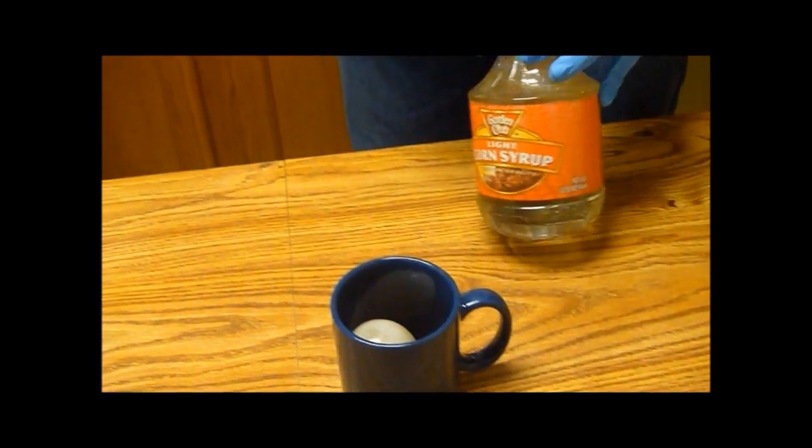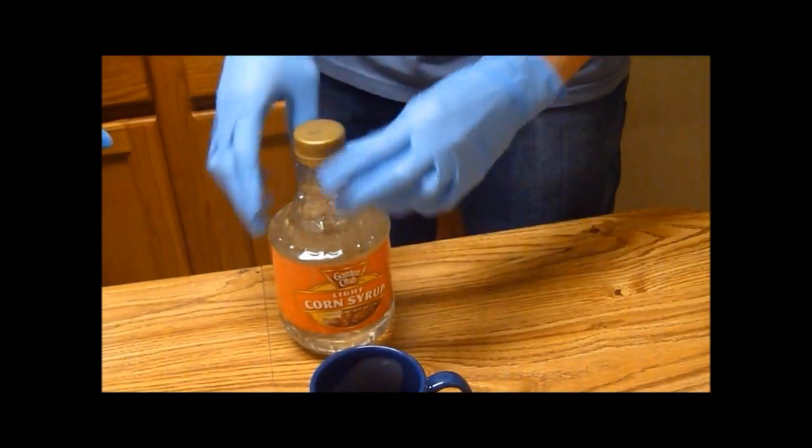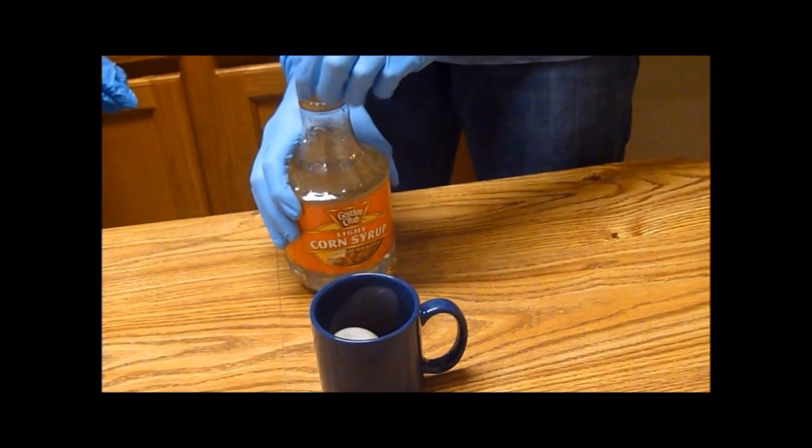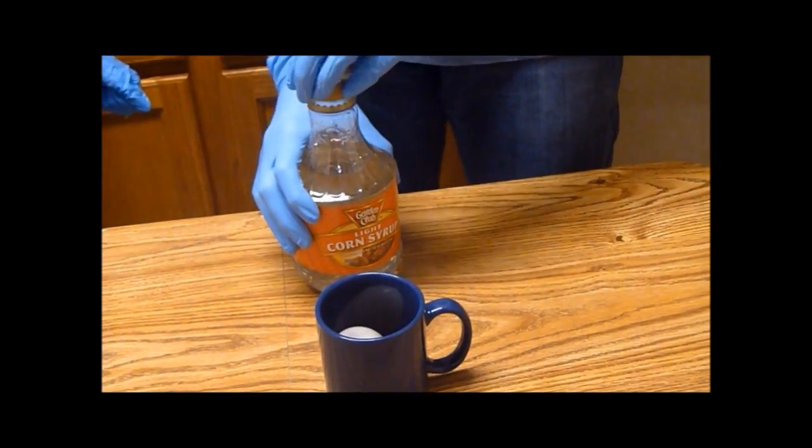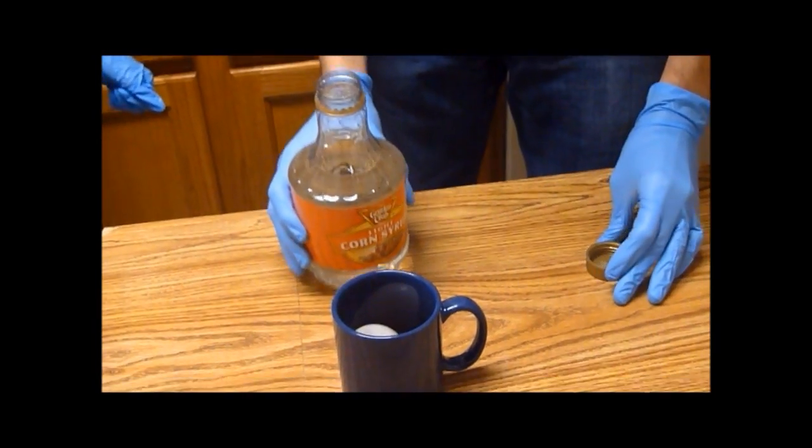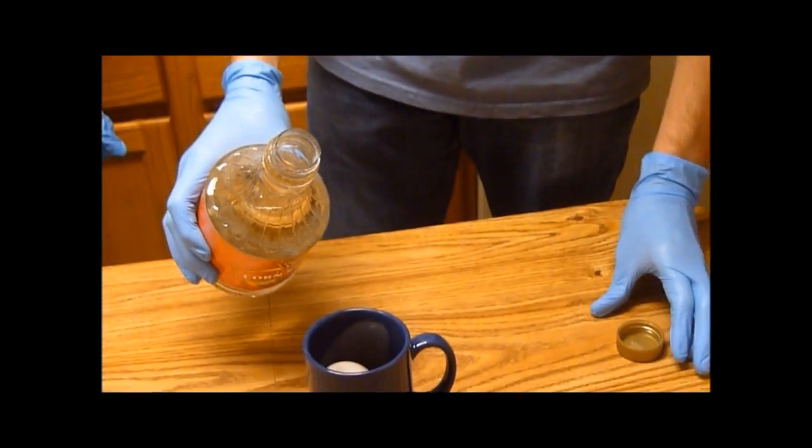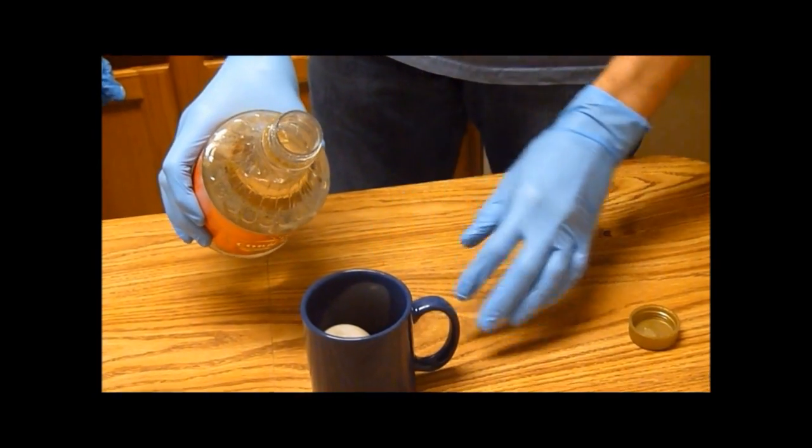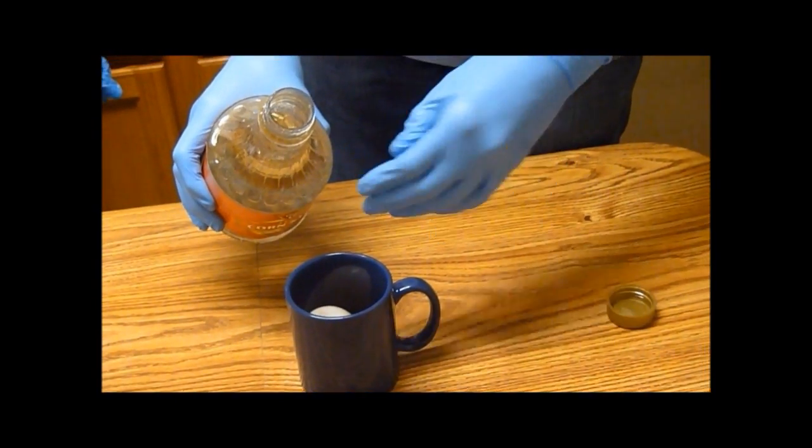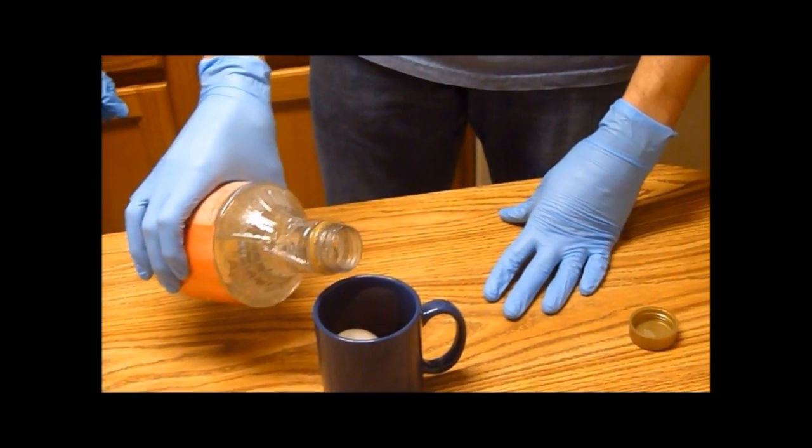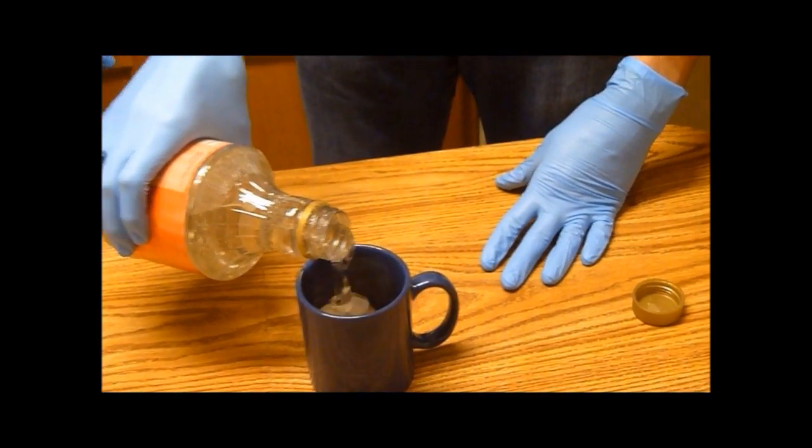So the corn syrup is mainly composed of sugar and it's suspended in mostly water or dissolved in. So when we add this, this is effectively our solute that we were talking about at the beginning. And the egg has a semi-permeable membrane surrounding it, holding it together. So we're going to add the corn syrup.